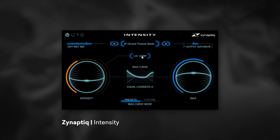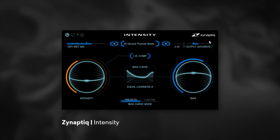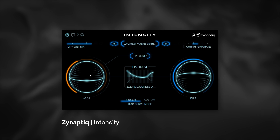We also have Level Compensation. This is like relative gain matching — if you turn it on, even though the effects will be taking place on the music, the output gain should stay relatively the same. When I turned it off it actually got louder, but when I turned it on it got quieter while still keeping the same characteristics. However, this does not include the output saturation, the dry/wet mix, and the bias control, so you will notice output changes if you start tweaking any of those. Mainly it's going to be level compensation for the Intensity ball.